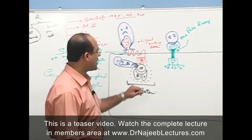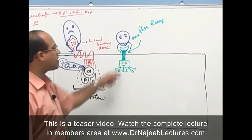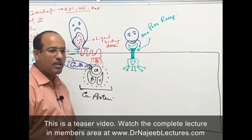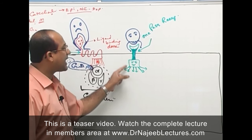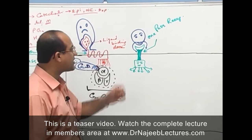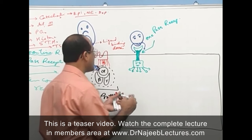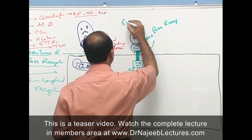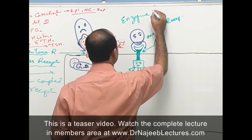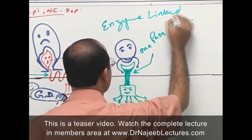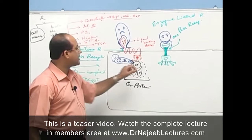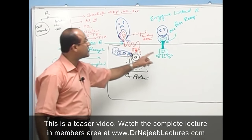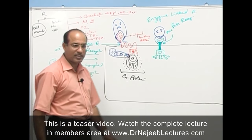Coming back to one-pass receptors: these have a unique effector domain, and usually this effector domain is an enzyme. Because the effector domain is an enzyme, the other name for one-pass receptors is enzyme-linked receptors. So to summarize: 7-pass receptor = G protein coupled receptor; 1-pass receptor = enzyme-linked receptor.